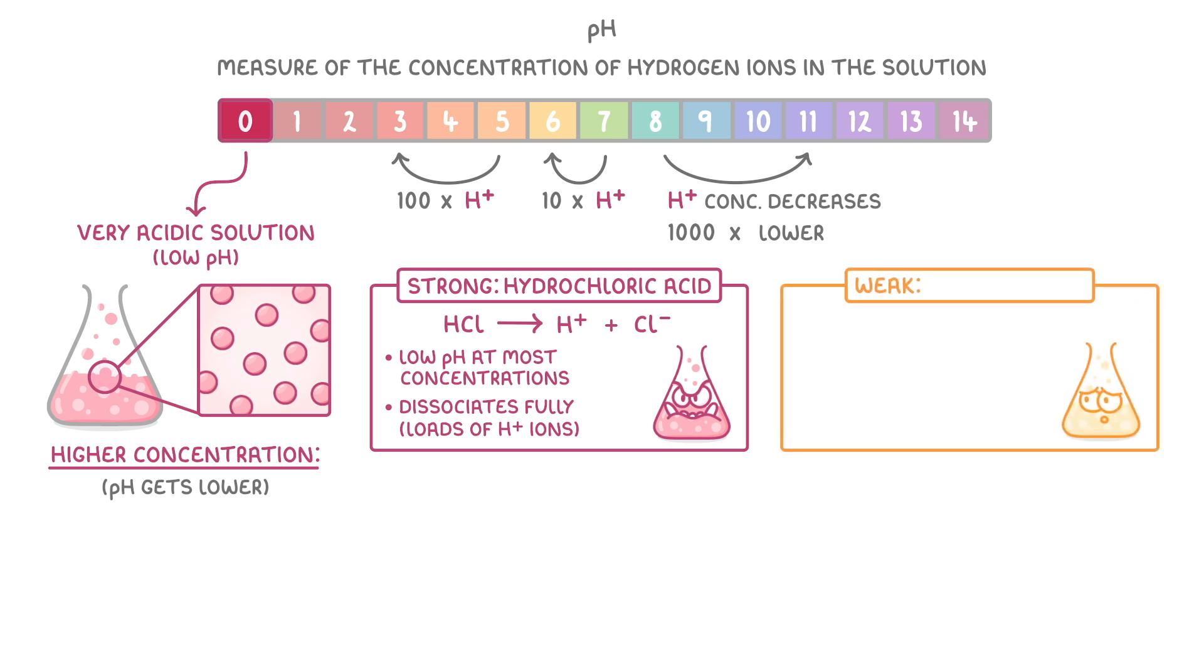On the other hand, if we had a weak acid, like carbonic acid, then to get a low pH it would have to be really concentrated, because so few of the acid particles would actually ionise and release their hydrogen ions.